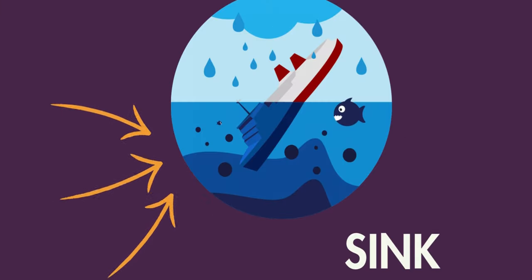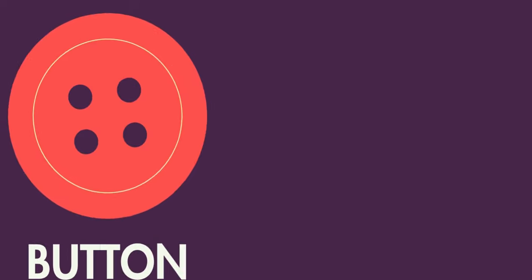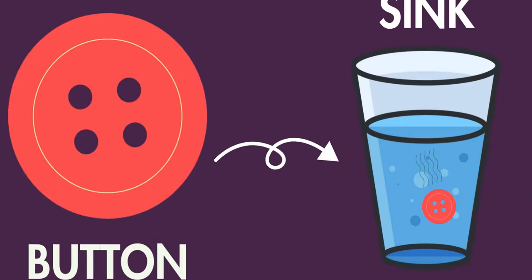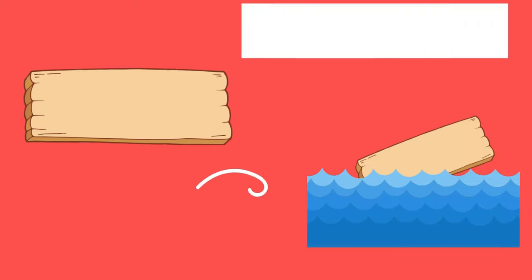Even though some items seem very light, like a button, it sinks in the water. An object that might have seemed sort of heavy, like a wooden block, can float.